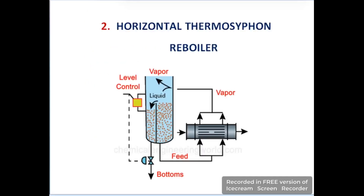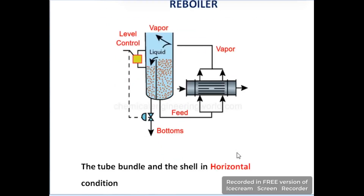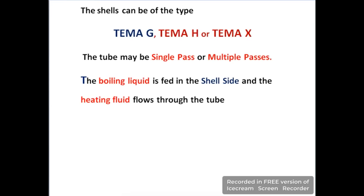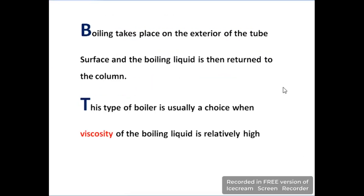The second type is the horizontal thermosyphon reboiler. Here you can see the tube bundle and the shell are both in a horizontal position. In this reboiler, the heating fluid and boiling fluid have opposite flow arrangements in the shell and tubes compared to vertical reboilers. Boiling takes place on the exterior of the tube surface, as the boiling liquid flows in the shell. After getting heat, it converts into vapor phase and the vapors go into the distillation column. This type of reboiler is used for liquids which have high viscosity.